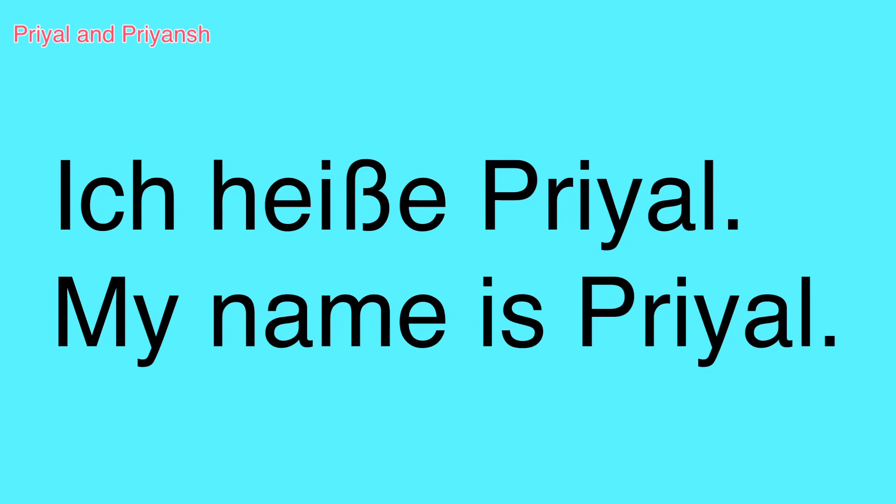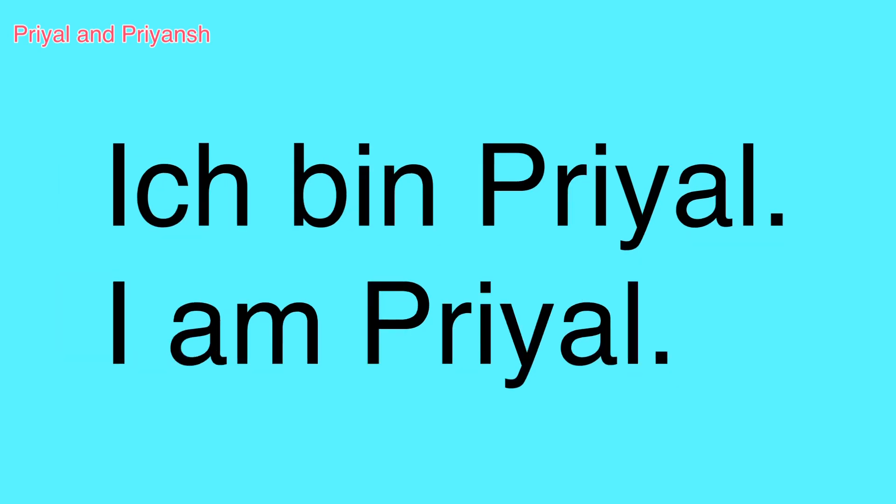Let's begin with the name. 'Ich heiße Priyal' — once again, 'ich heiße Priyal' — which means 'my name is Priyal.' Another way of saying your name is 'ich bin Priyal,' which means 'I am Priyal.' This sentence is generally used among friends.